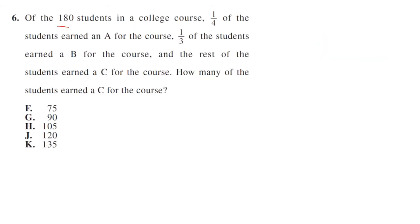Of the 180 students in a college course, one-fourth earn an A, so one-fourth A. One-third earn a B, and the rest earn a C. How many students earn a C?